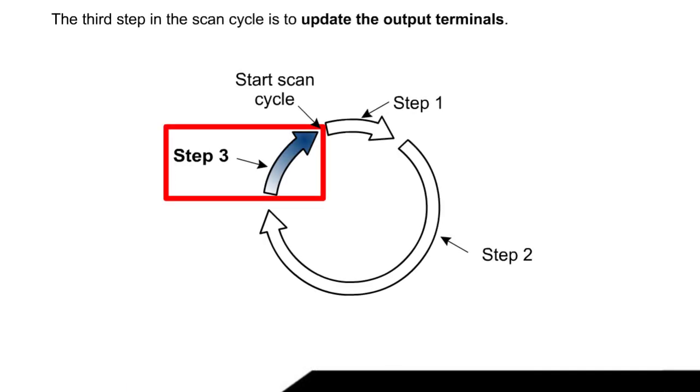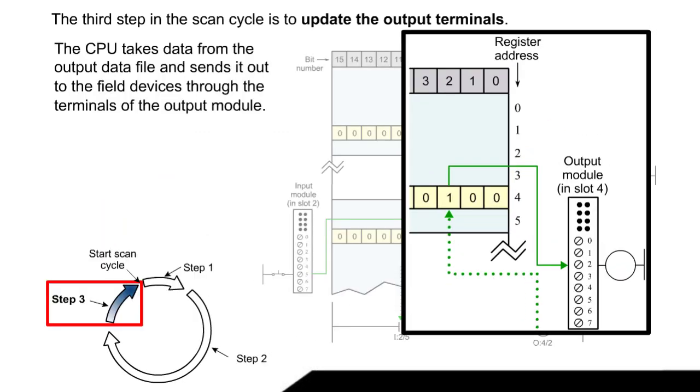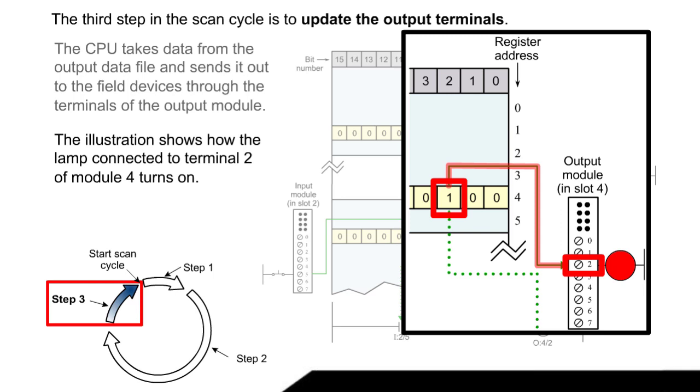The third step of the scan cycle is to update the output terminals. The CPU takes data from the output data file and sends it out to the field devices through the terminals of the output module. The illustration shows how the lamp connected to terminal 2 of module 4 turns on.